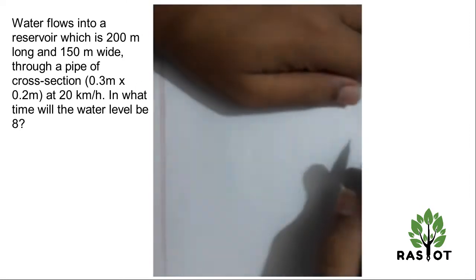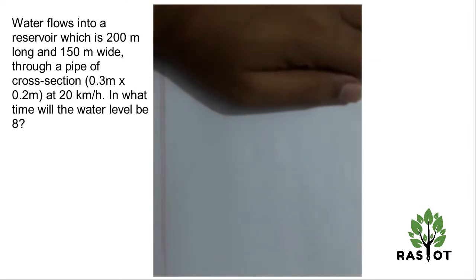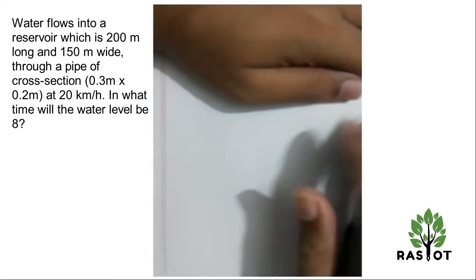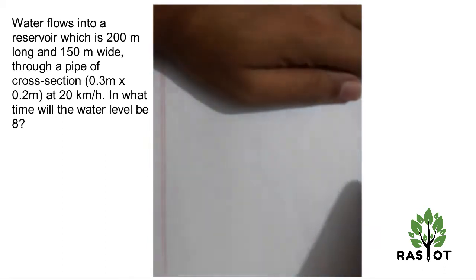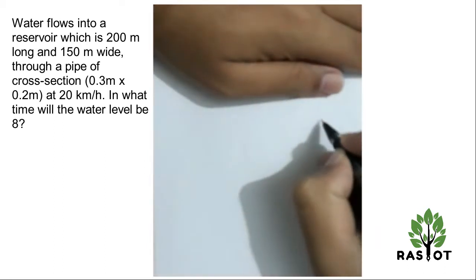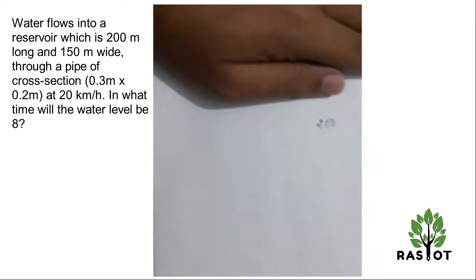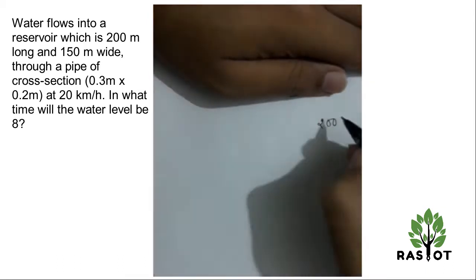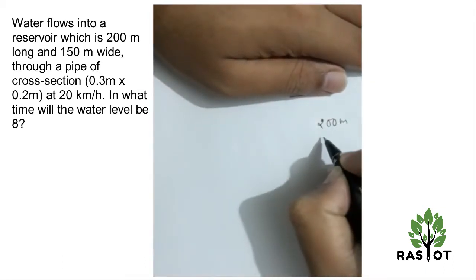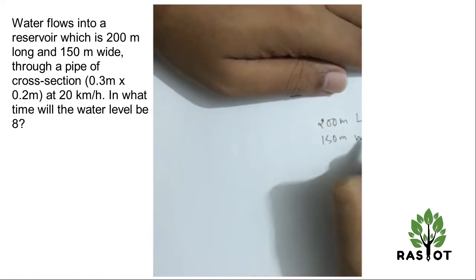Okay, so the question says water flows into a reservoir which is 200 meters long and 150 meters wide. So 200 meter long and 150 meter wide - it has a length, it has a width.